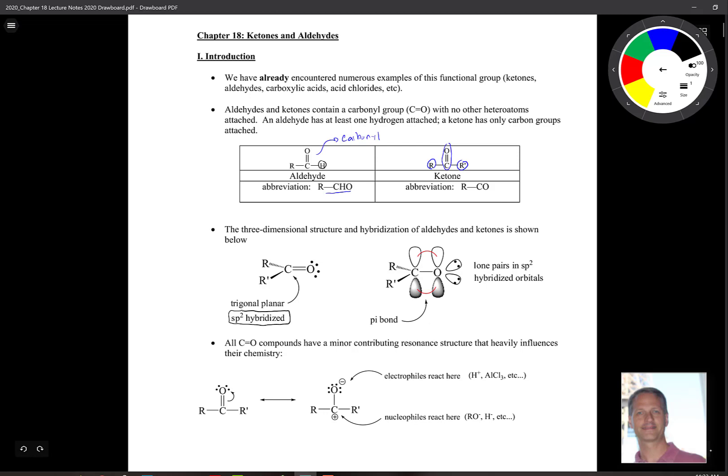So if we rotate it over on its side, we get our R group coming out at us and one going back into the plane of the page. Often we draw like this to illustrate and show the pi bond. So remember with sp2 hybridization, we have p orbitals on our oxygen and our carbon. And that's the overlap of those p orbitals that give us that pi bond. So that bond right here is our pi bond.